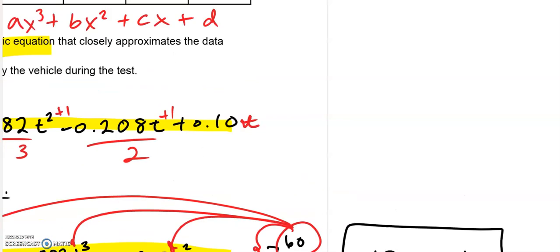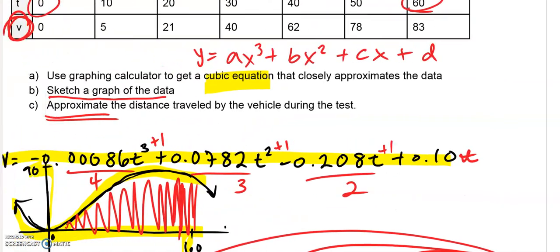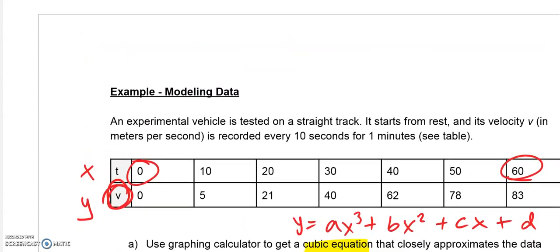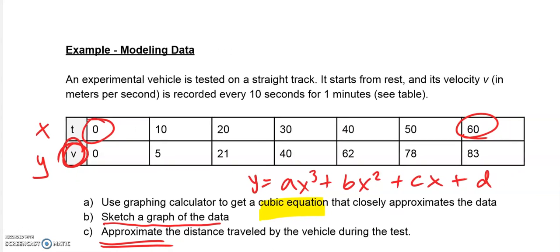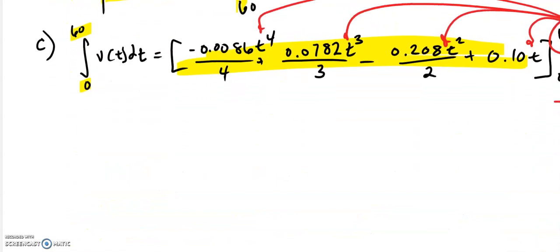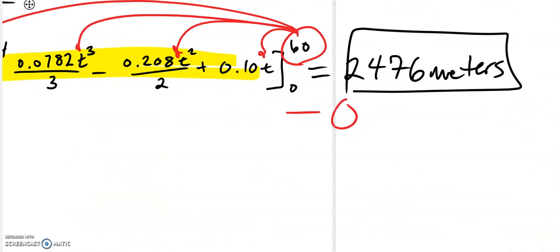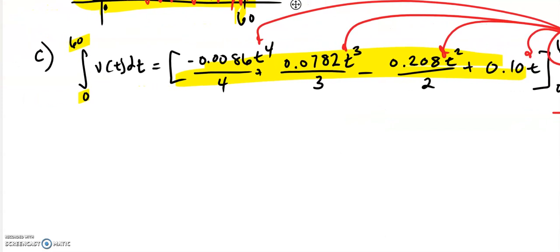So for this case, we answered the question. How far did it move during this test that the vehicle took when we're measuring the velocity with time intervals? And so the total that it moved was 2,476 meters during those 60 seconds.